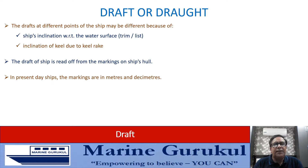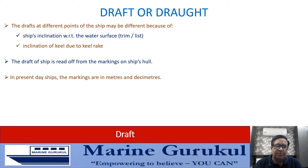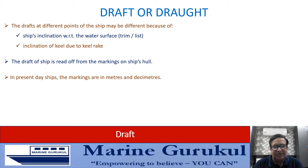In present-day ships, markings are in meters and decimeters. Earlier ships had markings in feet and inches — that's history now. Present-day ships have markings in meters and decimeters.